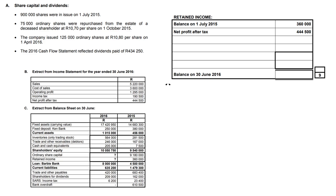We need to calculate our retained income note. We have our balance at the beginning of the year — it's $360,000. It's in bold; it was given to us. The net profit after tax amount was also given to us — it is also in bold. Let's complete the rest.